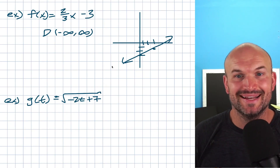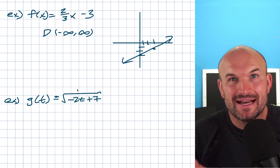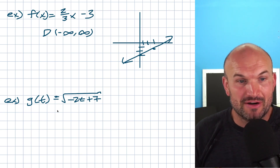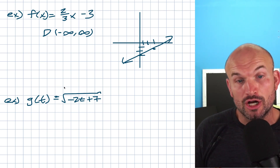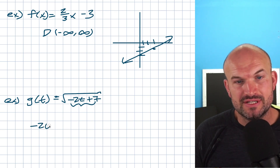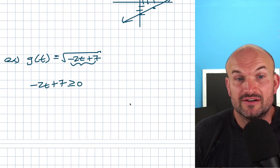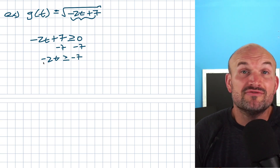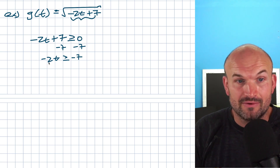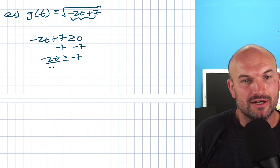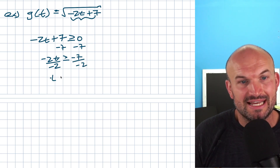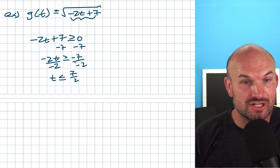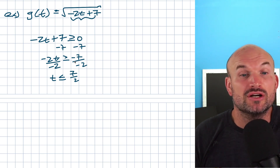In this next example, we have a square root, so remember: you cannot take the square root of a negative number. Set the radicand greater than or equal to zero: -2t + 7 ≥ 0. Subtracting 7 from both sides gives -2t ≥ -7. Now remember, whenever you divide by a negative number, you flip the inequality sign. So t ≤ 7/2. The values of the function that satisfy this are values less than or equal to 7/2.